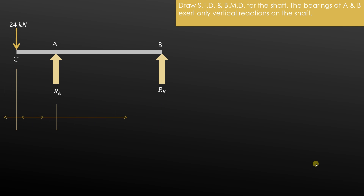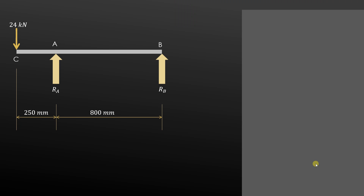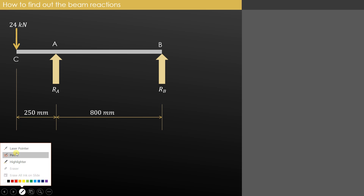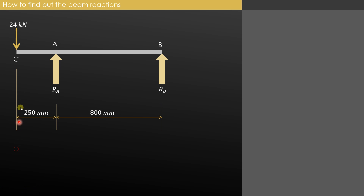The first step is to find out the beam reactions. The overhang is provided on the left hand side with a 24 kN load. We will apply the conditions of equilibrium to find out the beam reactions.